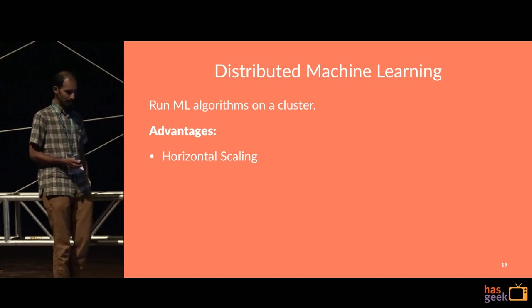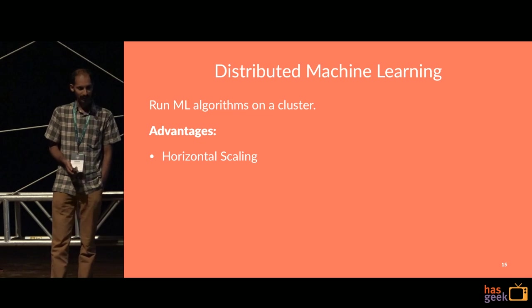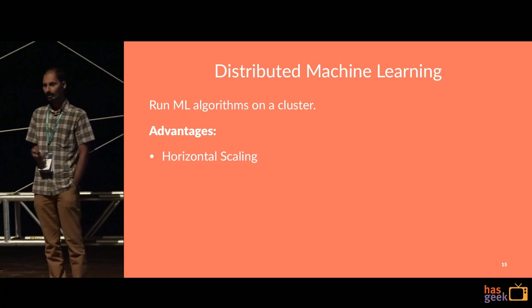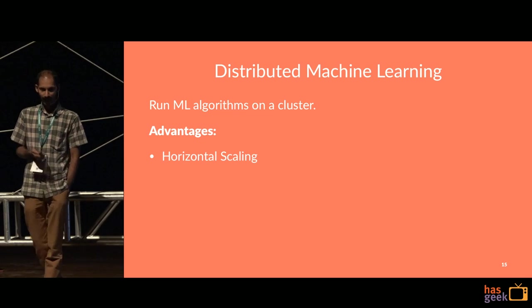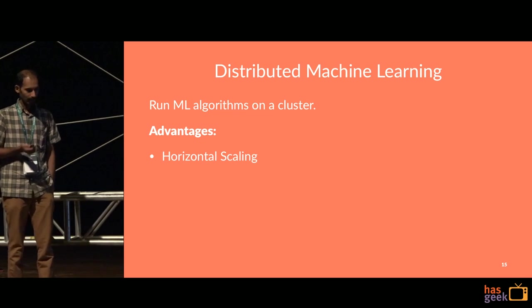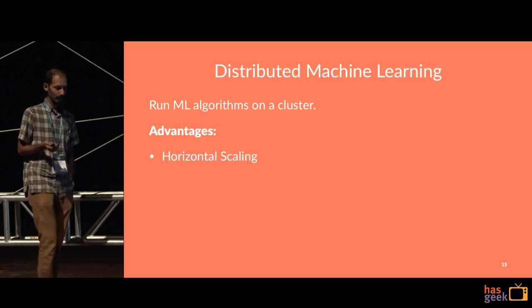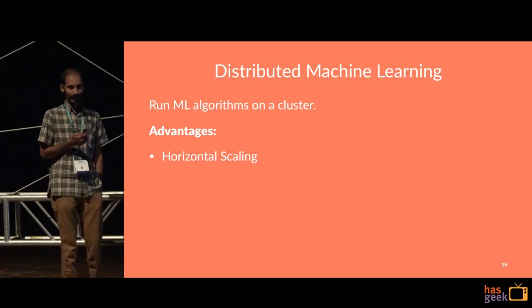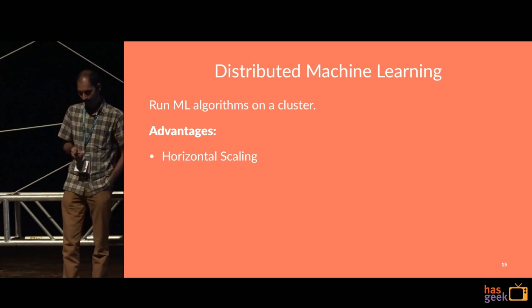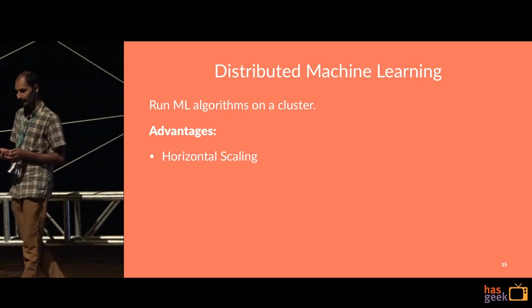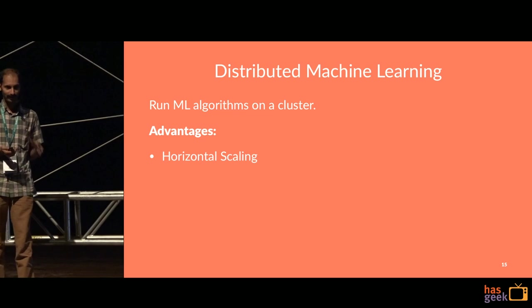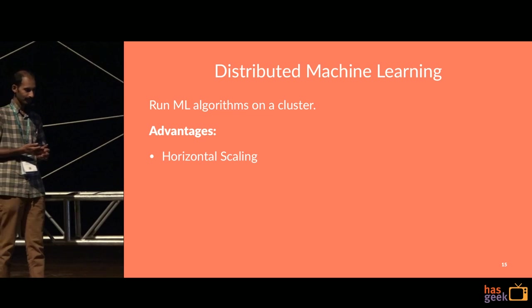Why do you really want distributed machine learning? The reason is that when you run machine learning on a cluster of computers, you get large horizontal scaling. Let's understand the terms horizontal scaling and vertical scaling.